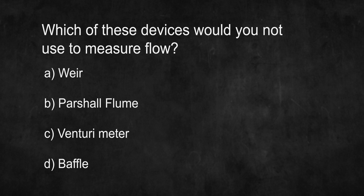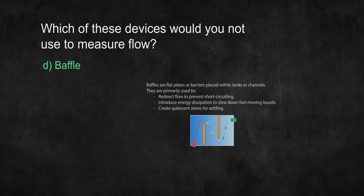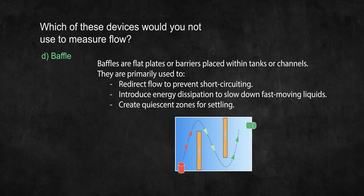Which of these devices would you not use to measure flow? The answer is D: baffle. Weirs, partial flumes, and venturi meters are all different types of flow measuring devices — baffles are not. Baffles are used to change the flow pattern and behavior of a liquid, but they are not designed to directly measure the flow rate of a liquid.